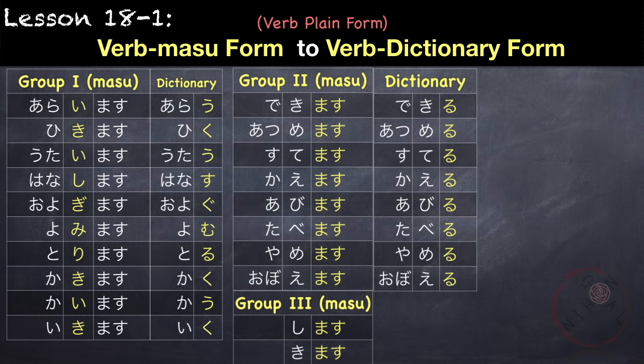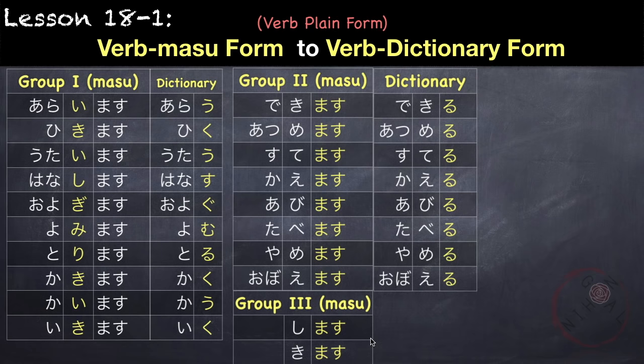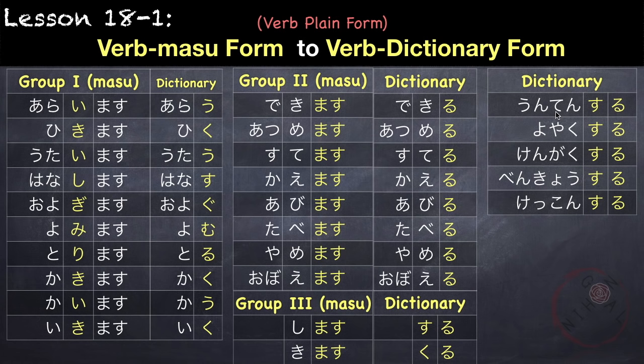And for verbs in group 3, we have shimasu and kimasu. Shimasu becomes suru, and kimasu becomes kuru. Other examples of group 3 verbs are: unten shimasu becomes unten suru, yoyakushimasu becomes yoyakusuru, benkyou shimasu becomes benkyousuru, kekkon shimasu becomes kekkonsuru. For the meaning of these verbs, make sure to check out the vocabulary list for this lesson.